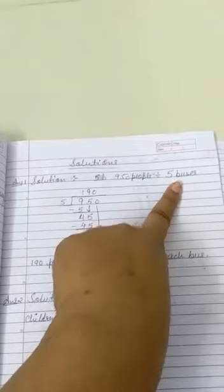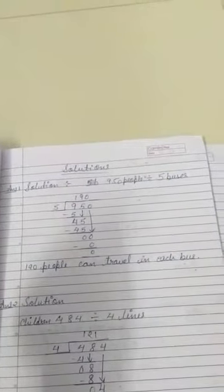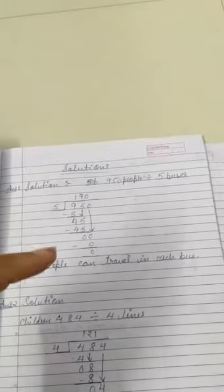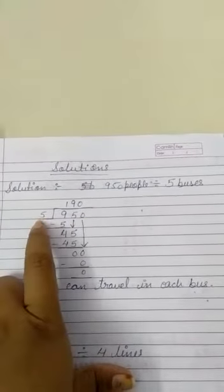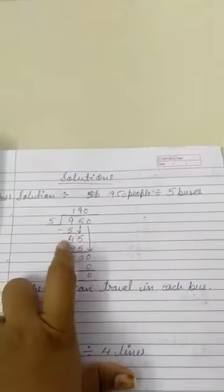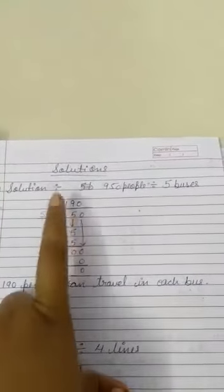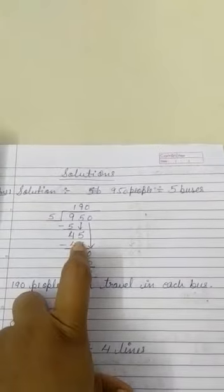Solution: 950 people divided by 5 buses. 950 will be divided by 5. So here is the division: 950 then 5. Five in nine? Does five come in nine? Yes, at once. So at once we will write 5.